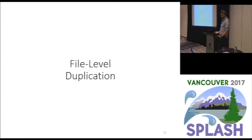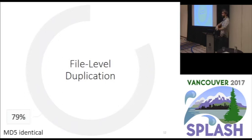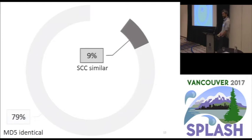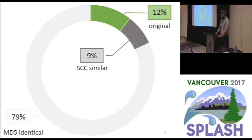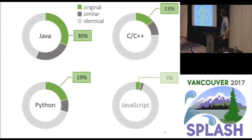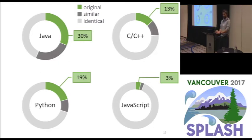In terms of file-level duplication, we found that across all four languages, almost 80% of files were identical copies of the remaining 20%. Furthermore, from that remaining 20%, 9% were determined by SourcererCC as being similar to the remaining 12%, which we call originals. Java was the best, with over 30% of its files being originals and less than half the dataset being identical clones.